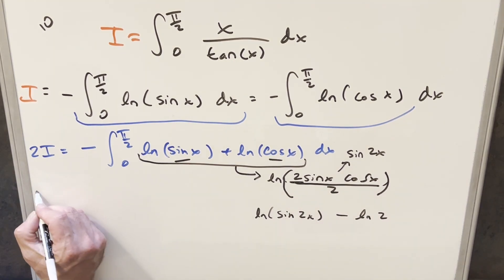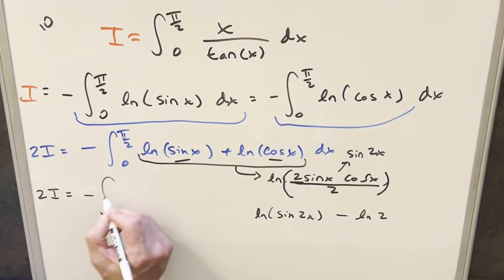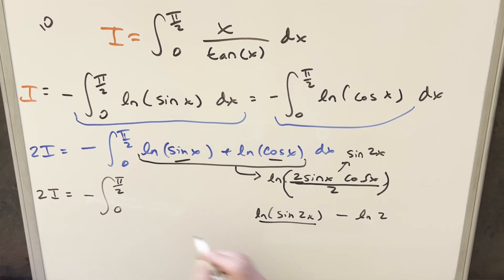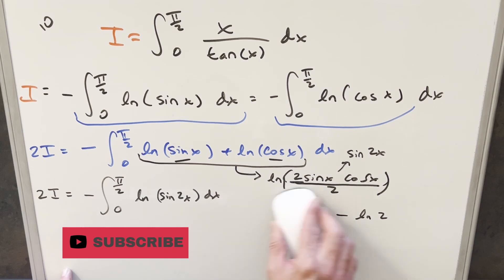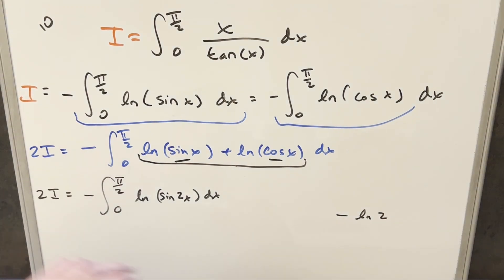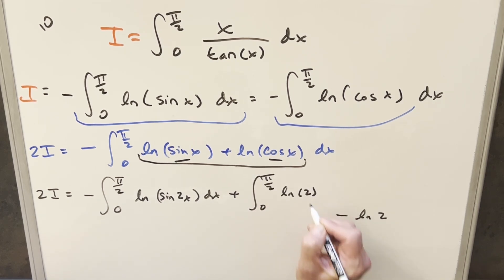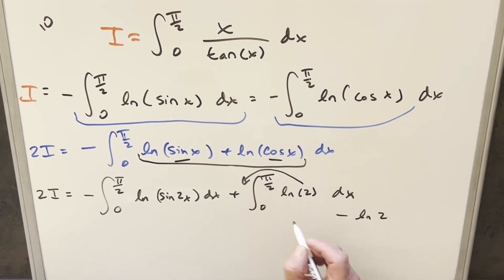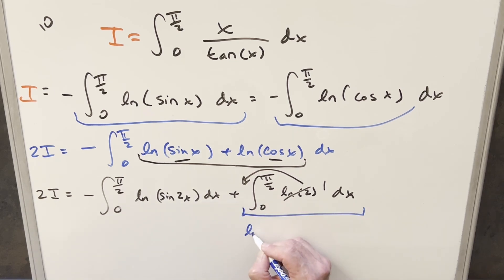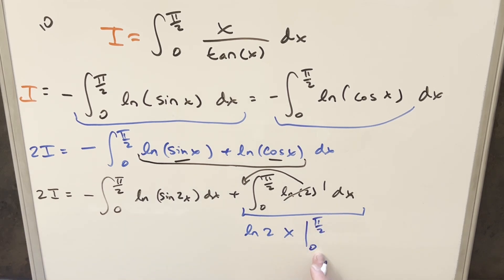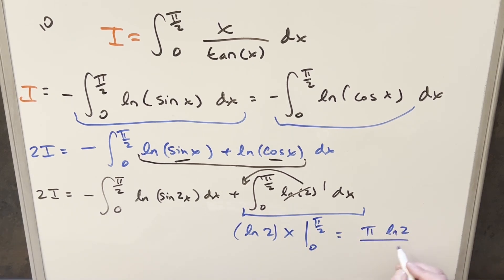Putting this back as two separate integrals: the first is minus the integral from 0 to π/2 of ln(sin(2x)) dx. For the second part, distributing the minus into the minus gives a plus in front, so we have plus the integral from 0 to π/2 of ln(2) dx. Since ln(2) is a constant, we bring it out front and integrate 1. Evaluating from 0 to π/2 gives us π·ln(2)/2.